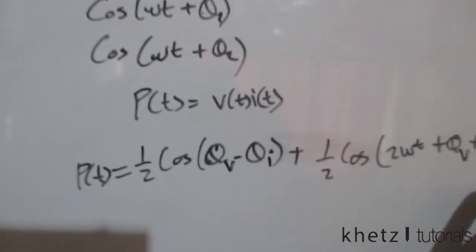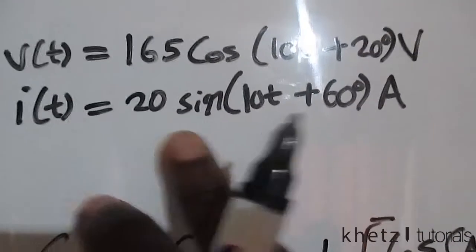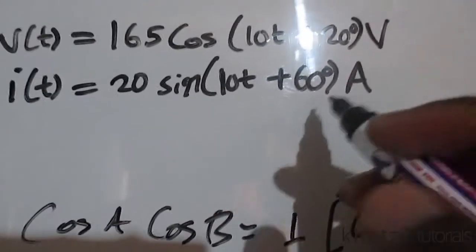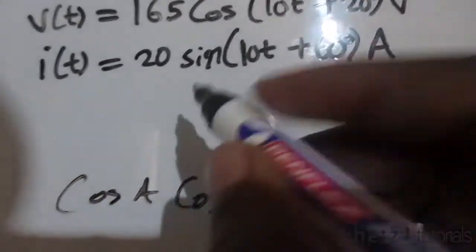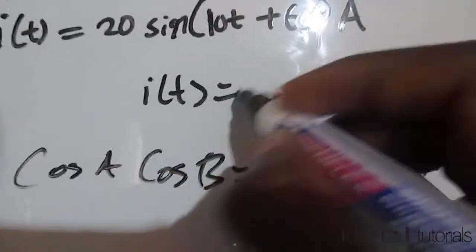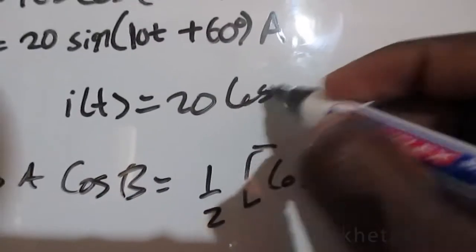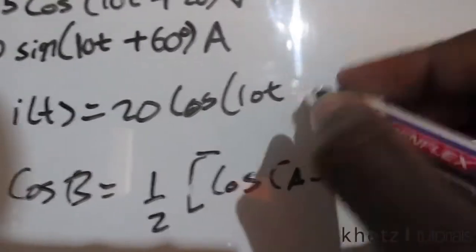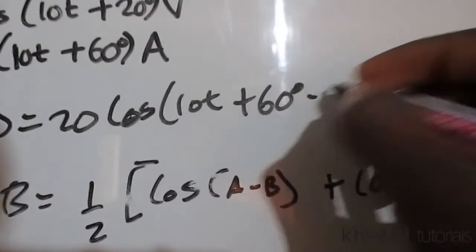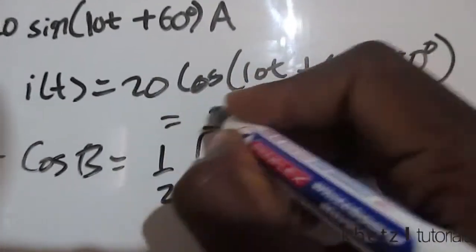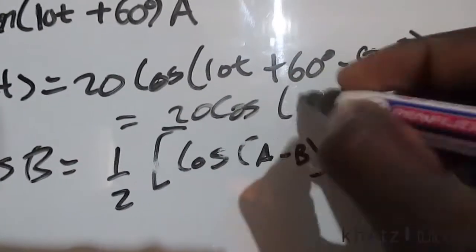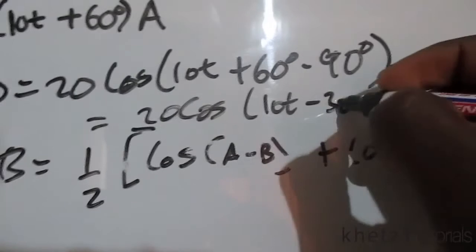So now that we have this formula we can just basically convert this into cosine as well and to do that you just subtract the argument or subtract 90 from the argument and therefore it goes to 20 cosine (10t + 60°) and subtract 90 and that will give us 20 cosine (10t - 30°).